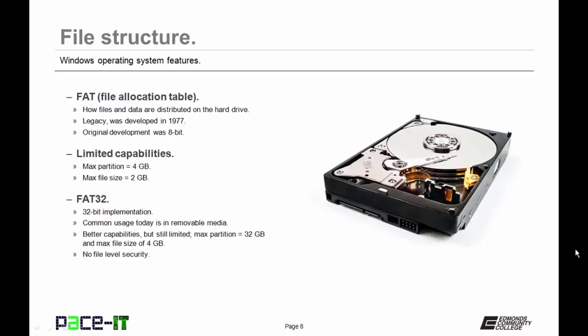We begin with FAT — File Allocation Table. It's how files and data are distributed on the hard drive. It's legacy and was developed in 1977. The original deployment was 8-bit and had limited capabilities. The max partition was 4 gigabytes, and the max file size was 2 gigabytes.